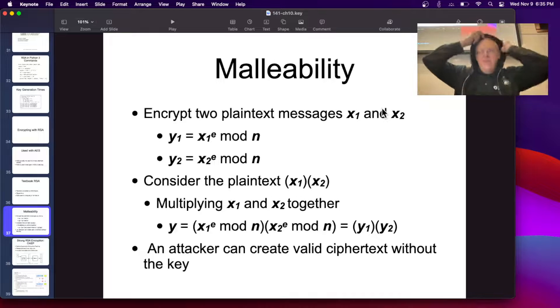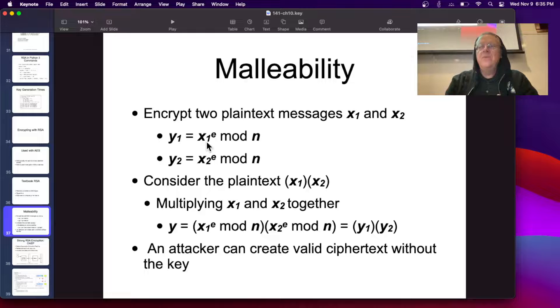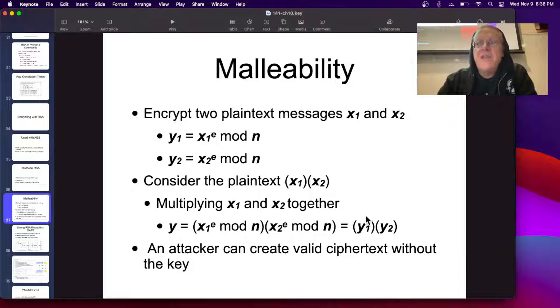Now, it has some serious flaws. Here's one of them. If I encrypt two plain text messages, they're just numbers X1 and X2, then I have Y1 and Y2 is X to the E mod N, but that means if I have the ciphertext here, I could multiply those ciphertexts together, and I would have the correct ciphertext for multiplying the two plain text together, so I can create a valid ciphertext without the key. I don't know what it is, but it's not a very nice system. I can use the ciphertext, and I can use it to construct another ciphertext, which will still be valid to decrypt with the key.